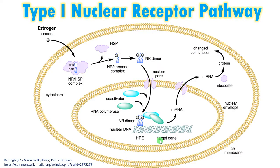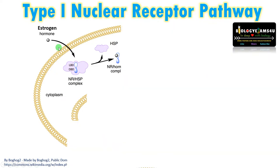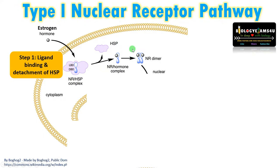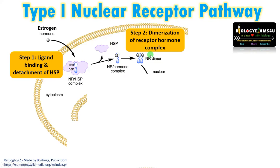Now let us understand the type 1 nuclear receptor pathway, using estrogen as an example. Step 1 is ligand binding and detachment of heat shock proteins. In its inactive state, the receptor is bound to heat shock proteins. Upon ligand binding, the heat shock protein is detached. Step 2 is nuclear receptor dimerization — the receptor-hormone complex forms a dimer.